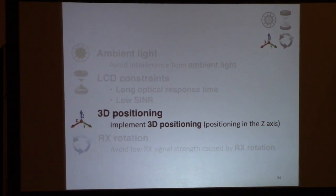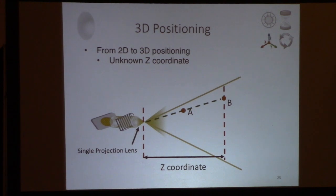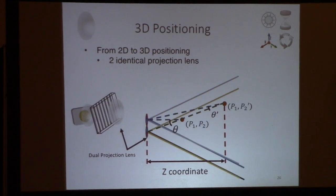Next, we're going to talk about how we enable 3D positioning using a single transmitter. Until now, the positioning signal only provides 2D coordinate positioning. You cannot estimate the Z coordinate. To solve this, we replace the original projection lens with two identical parallel lenses so that the receiver can estimate its position with respect to both lenses and use triangulation to estimate the Z coordinate.